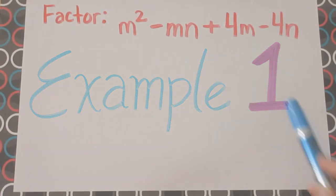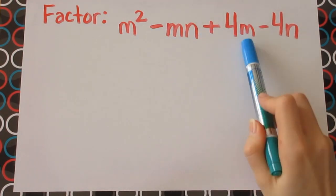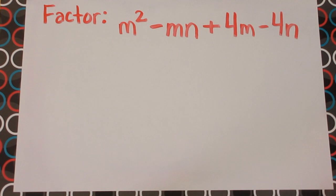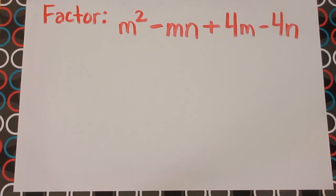Let's see an example. In this first example you can see that there's an m in three of the terms, there's an n in two of the terms, and there's a number four in two of the terms. So this means that there isn't a common factor between all four terms.